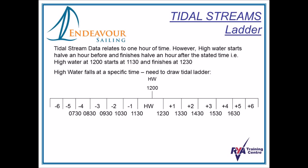High water plus 1 would be 12:30 to 1:30. High water minus 1 is 10:30 to 11:30. We can work all the way through plus 2, plus 3, plus 4, plus 5, plus 6, or minus 1, minus 2, minus 3, minus 4, minus 5, and minus 6. From each of those times we now know which hour we are looking for in our tidal stream data.